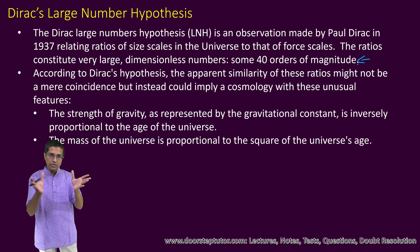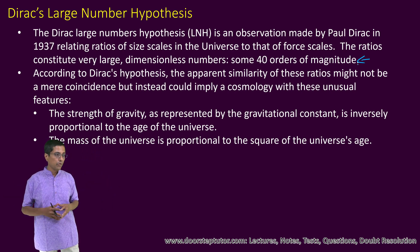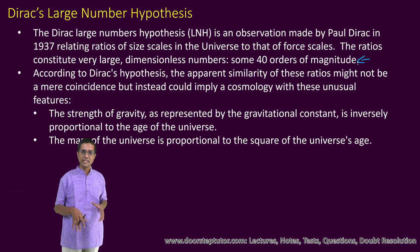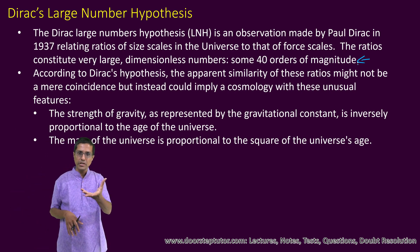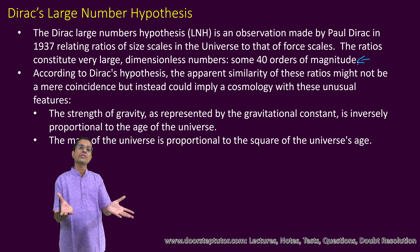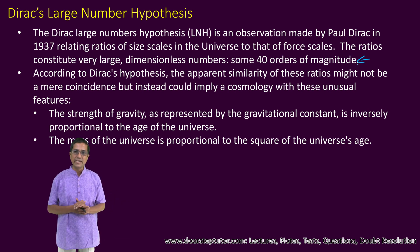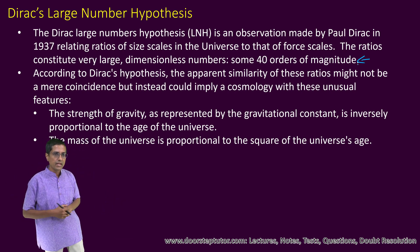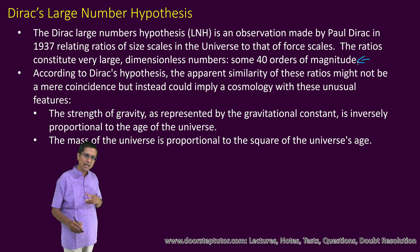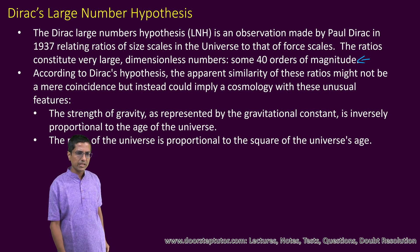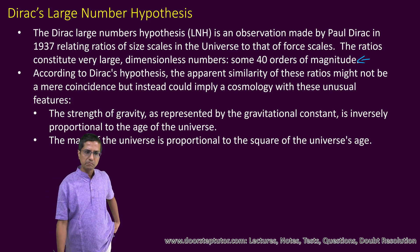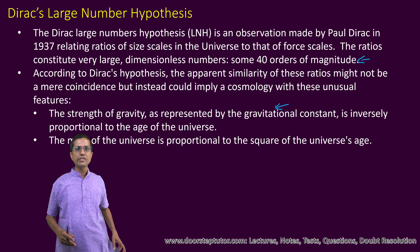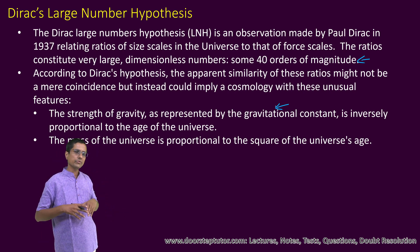Some people have said this 40 orders of magnitude difference is very important for our universe to work the way it does — it is how it was supposed to be. Similarly, Dirac observed that the gravitational constant is inversely proportional to the age of the universe. This could be a coincidence, but it could also be fundamental to how our universe functions.